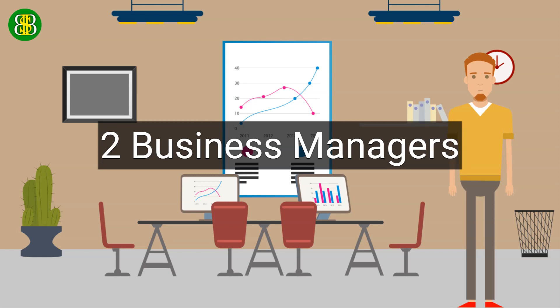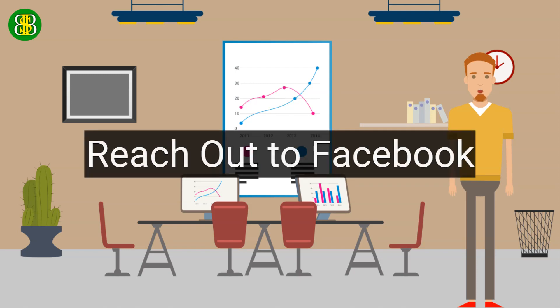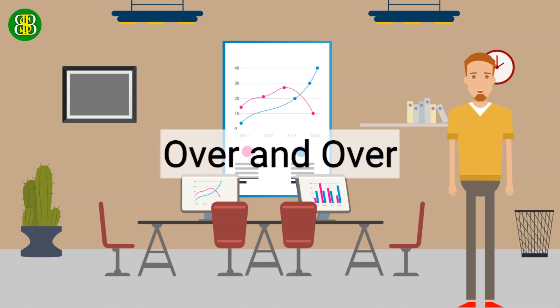Then do the same process. Open two business manager accounts, add five ad accounts each, put some spending on it, then try to reach out again to Facebook to see if they will approve you for more ad accounts. You can do this process over and over again.